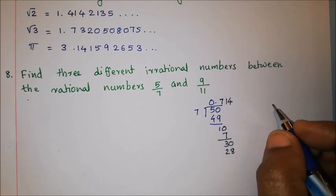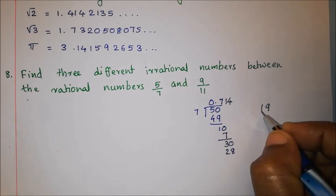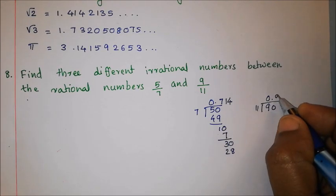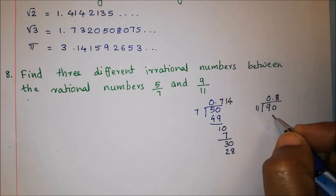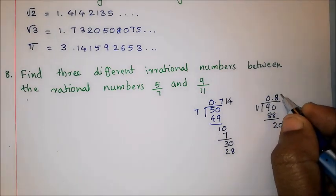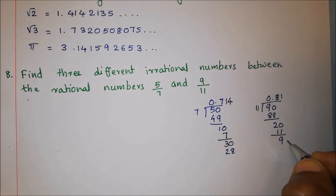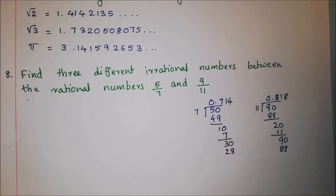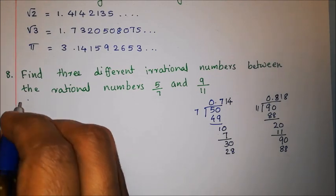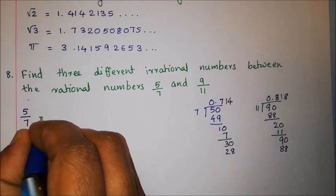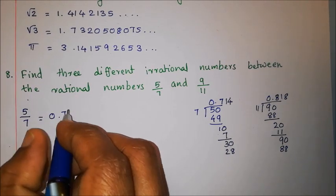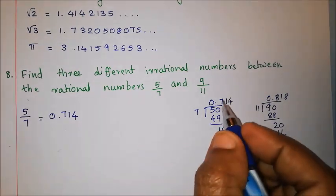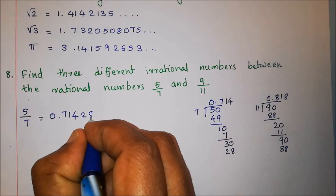For 9 by 11, performing long division: 9 by 11 gives 0.818181... Now, 5 by 7 equals 0.714285... So 5 by 7 equals approximately 0.714 and 9 by 11 equals approximately 0.818.